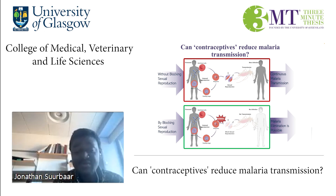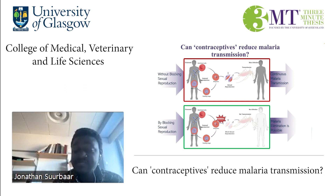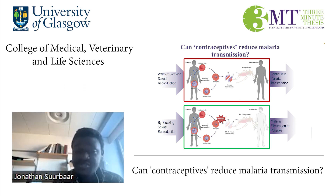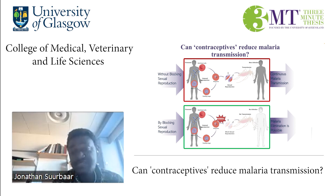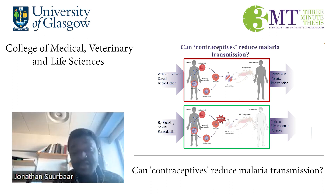This process increases the parasite numbers exponentially, therefore causing the disease malaria. However, a tiny proportion of these parasites decide to be sexual, thereby developing into male and female forms.